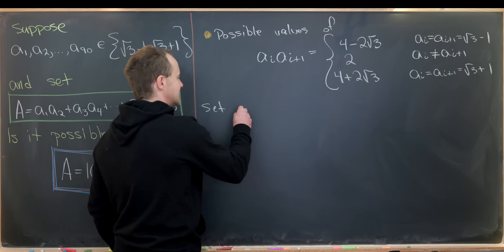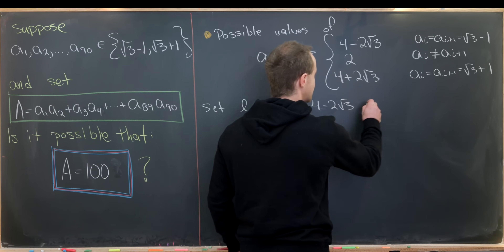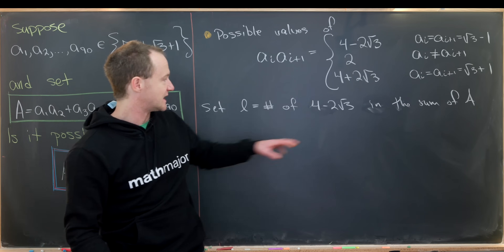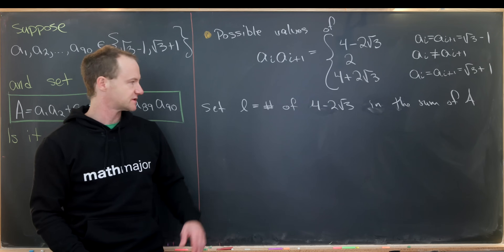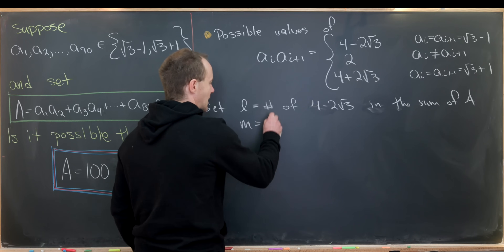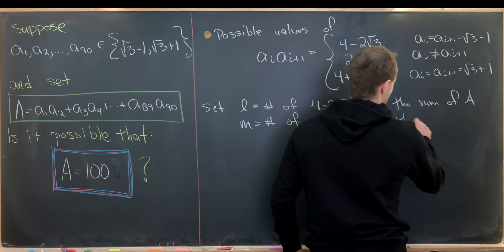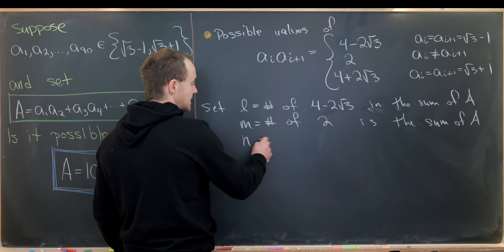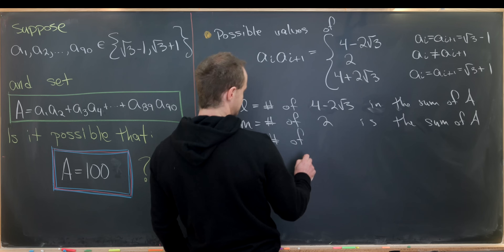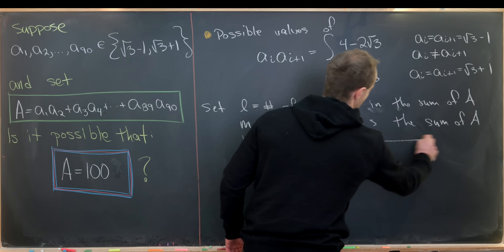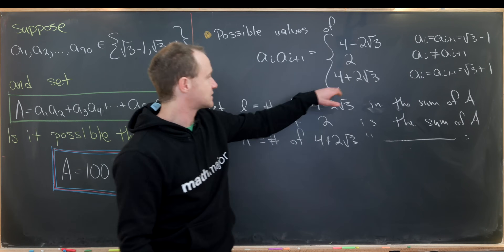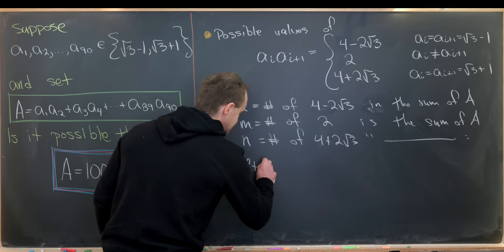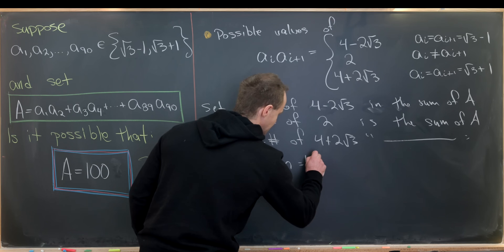Let l be the number of times 4 minus 2√3 occurs in the sum A, m be the number of times 2 occurs, and n be the number of times 4 plus 2√3 occurs. Since we have 90 total numbers taken in disjoint chunks of 2, this immediately gives us l plus m plus n equals 45.